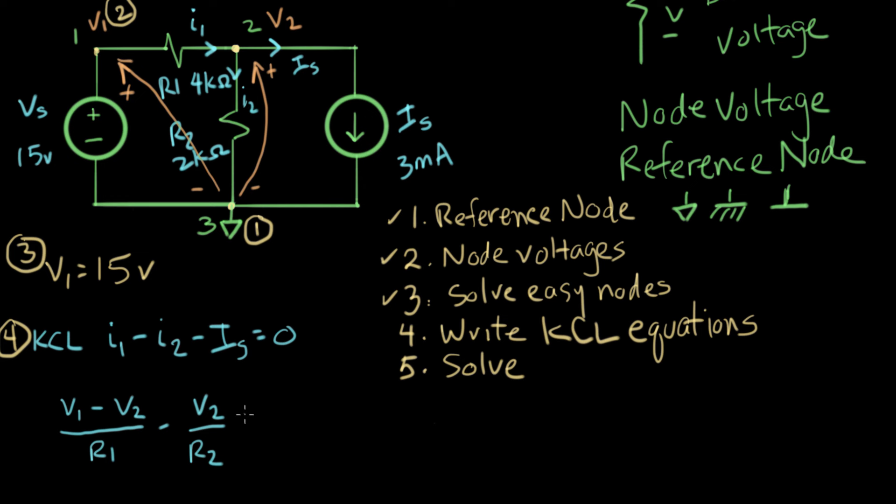And the last current is IS minus IS. We'll just keep, we'll write that in terms of IS like that, and that equals zero. So this means, this means we have now completed step four. That is KCL written using the terminology of node voltages. And we can check off that we've done step four.